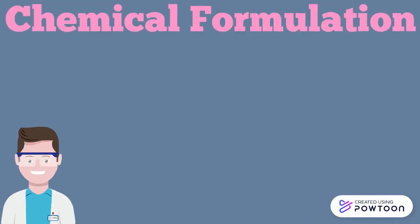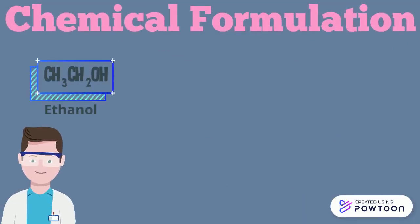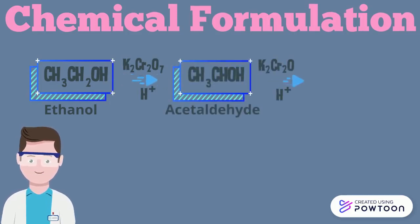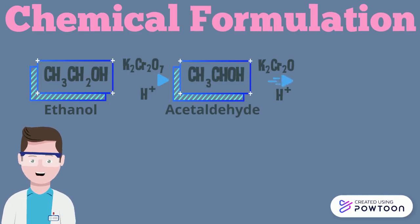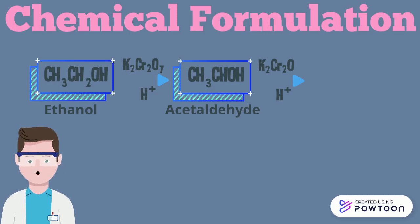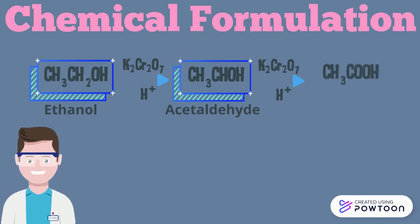First, alcohol is dehydrogenated to form acetaldehyde. Next, two hydrogen ions lined with oxygen form water that hydrates acetaldehyde to form aldehyde. Lastly, aldehyde hydrogenase converts acetaldehyde to acetic acid.